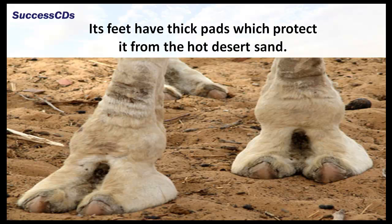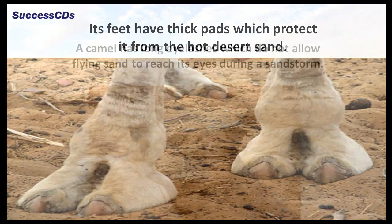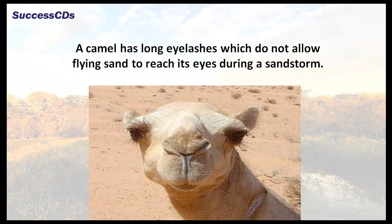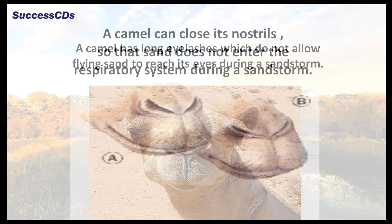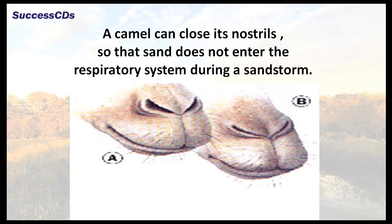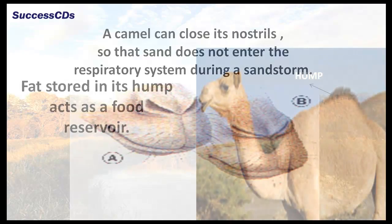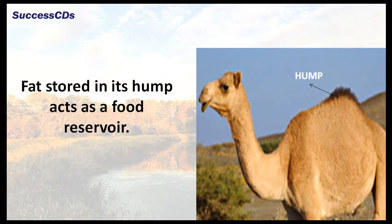Its feet have thick pads which protect it from the hot desert sand. A camel has long eyelashes which do not allow flying sand to reach its eyes during a sand storm. A camel can close its nostrils so that the sand does not enter the respiratory system during a sand storm. Fat stored in its hump acts as a food reservoir.